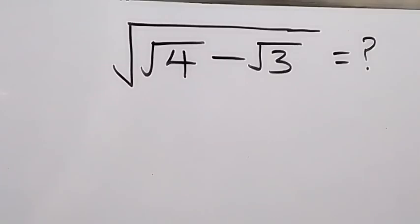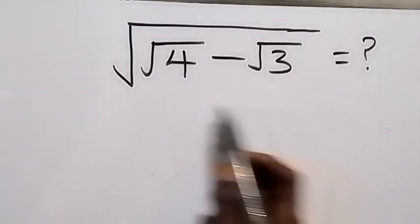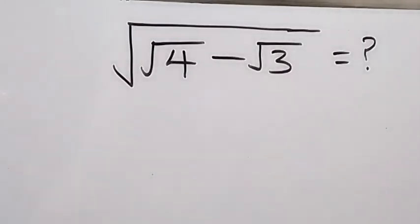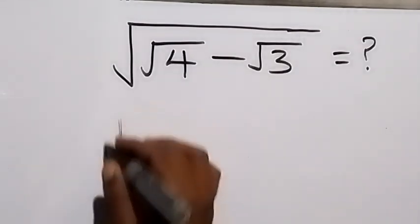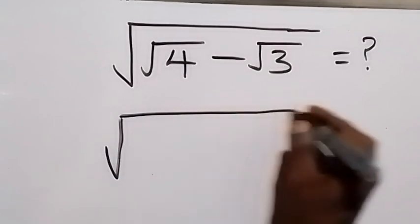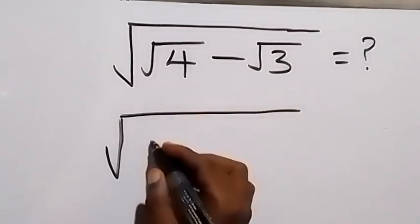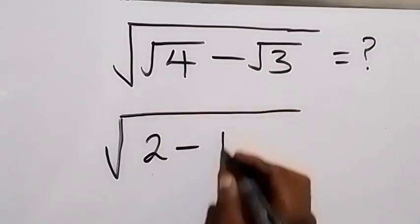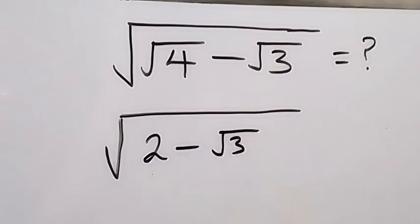Hello, you are welcome. How to solve this problem: square root of root 4 minus root 3? From here we can write this as square root of, the square root of 4 is 2, that's 2 minus root 3.